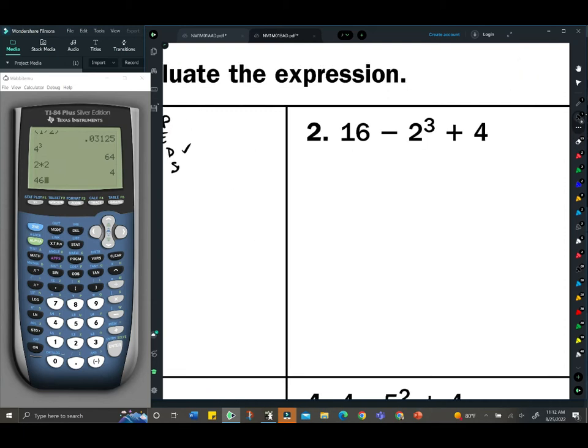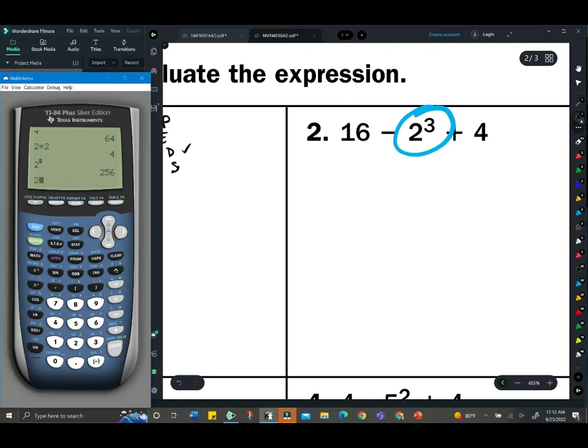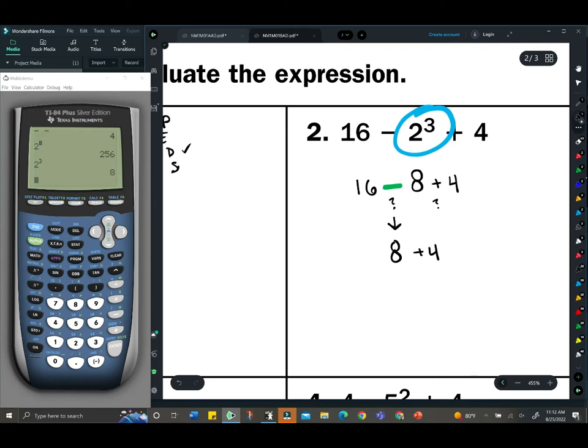Next, the first thing we have to do is 2 to the 3rd. Using the calculator, 2³ is 8, which is not 2 to the 8th. Now we have a decision: are we going to add first or subtract first? From left to right means we do subtraction: 16 - 8 is 8, plus 4, then we add to get 12.